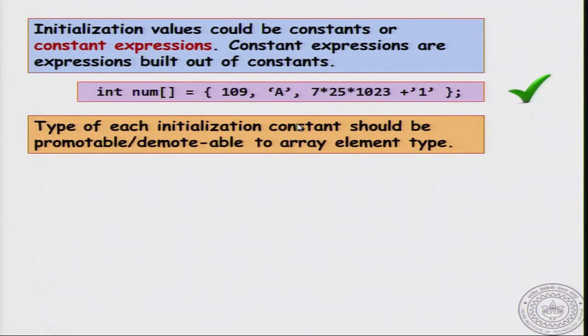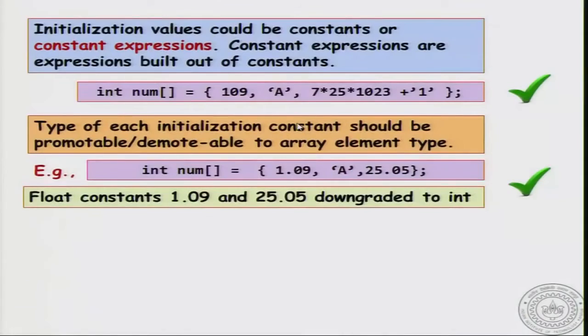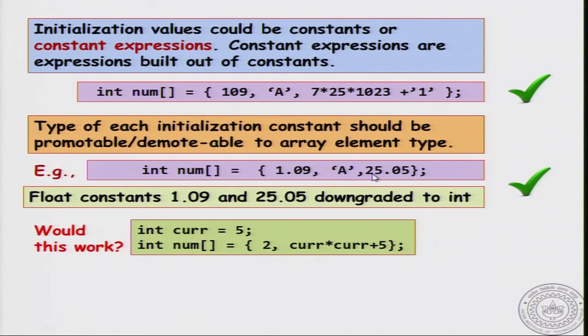The type of each initialization constant should be promotable or demotable to the array element type. Each value in the initialization list should be compatible with let's say integer because we have declared the array of type integer. What do I mean by that? For example, I can initialize an array num with the initialization list {1.09, then comma 'A', 25.05}. This is ok, because the floating point values can be downgraded to integers. Maybe this will be initialized to 1, then whatever the ASCII value of A is let's say 65 and then 25.